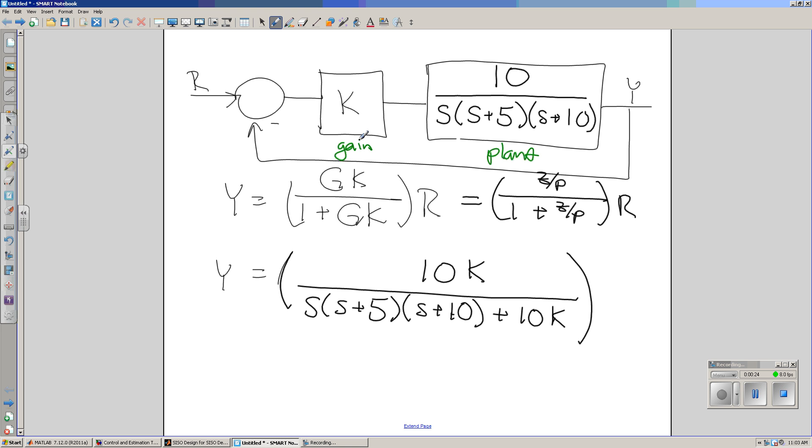What happens as k varies between 0 and infinity? If you do the algebra, the closed-loop system happens to be 10k over s(s+5)(s+10) plus 10k. Essentially what I'm doing is finding the roots to a cubic as k varies.